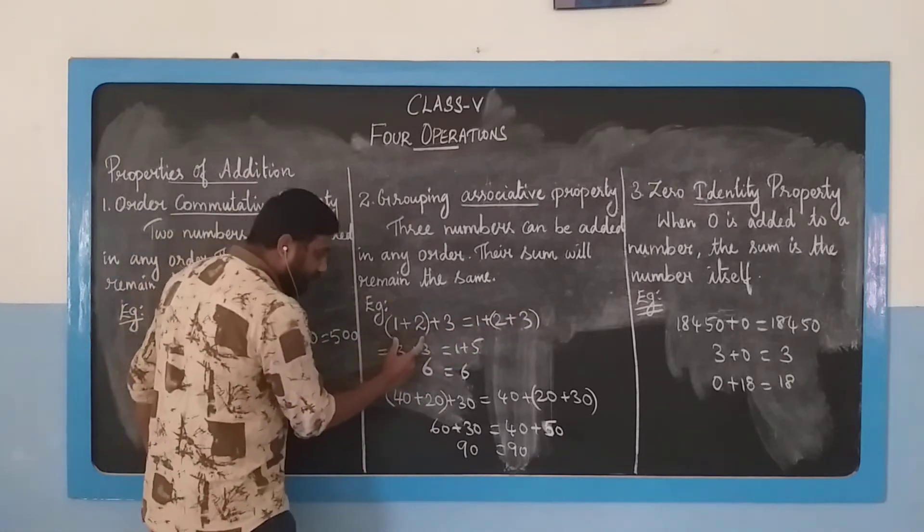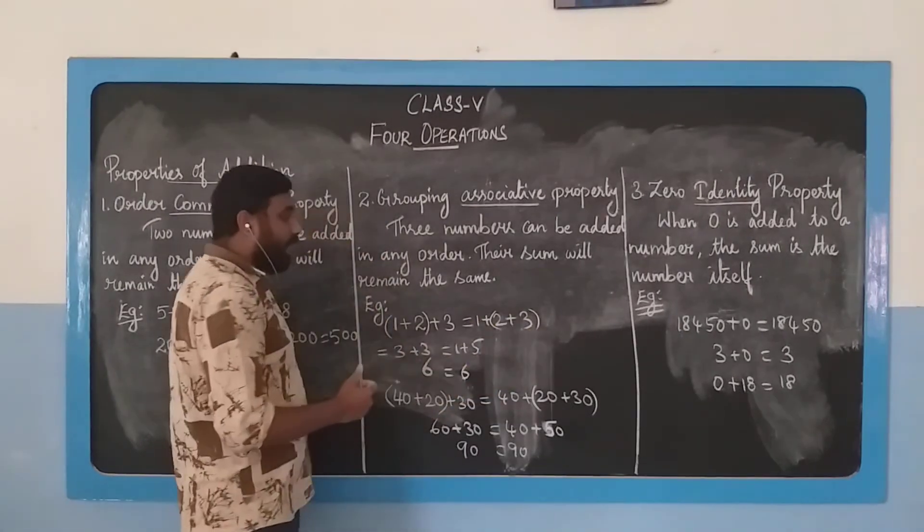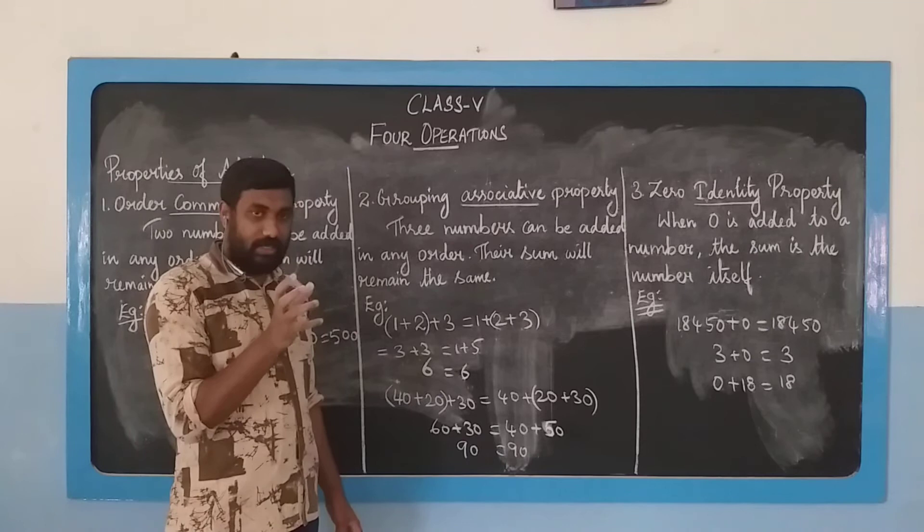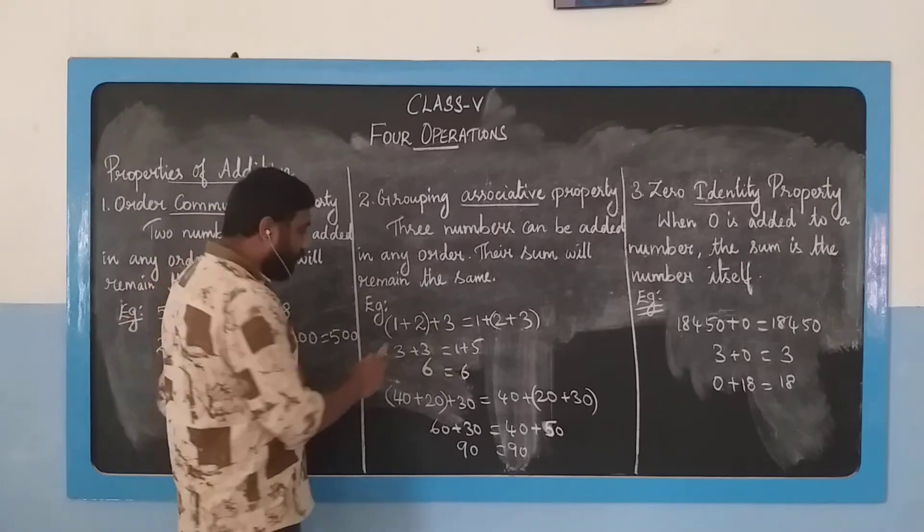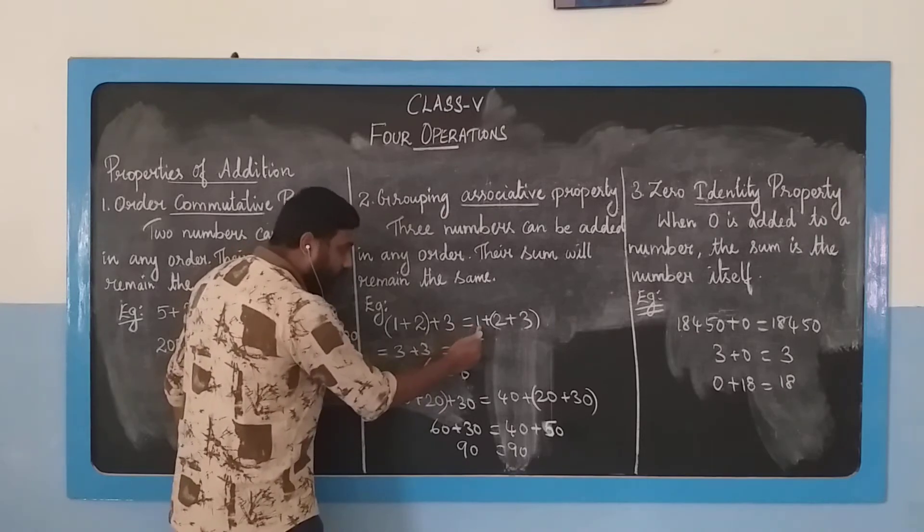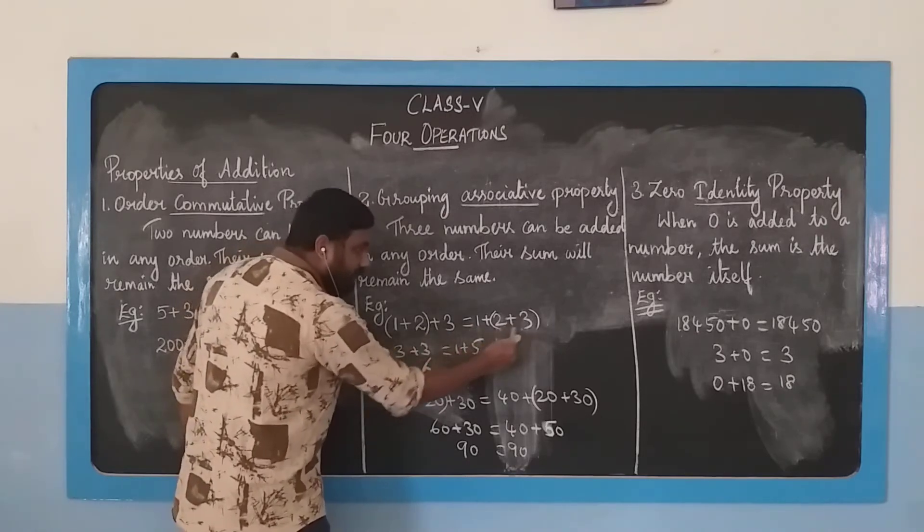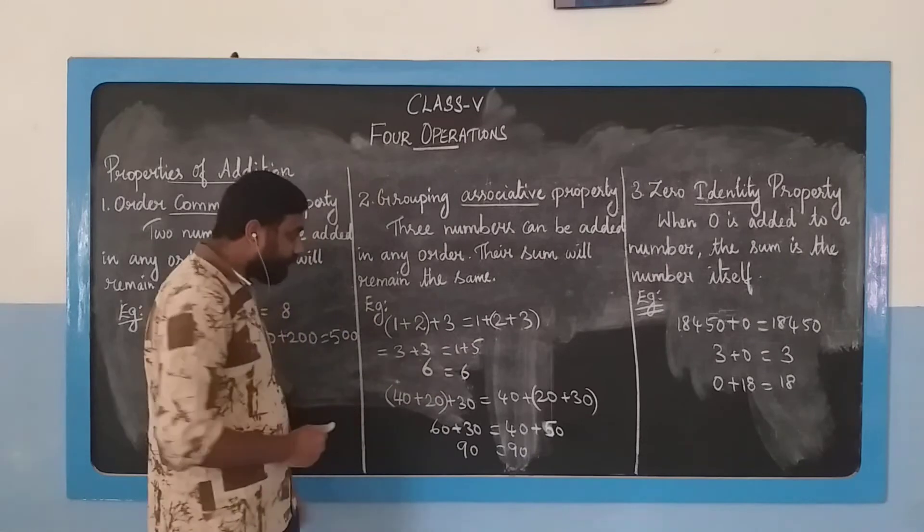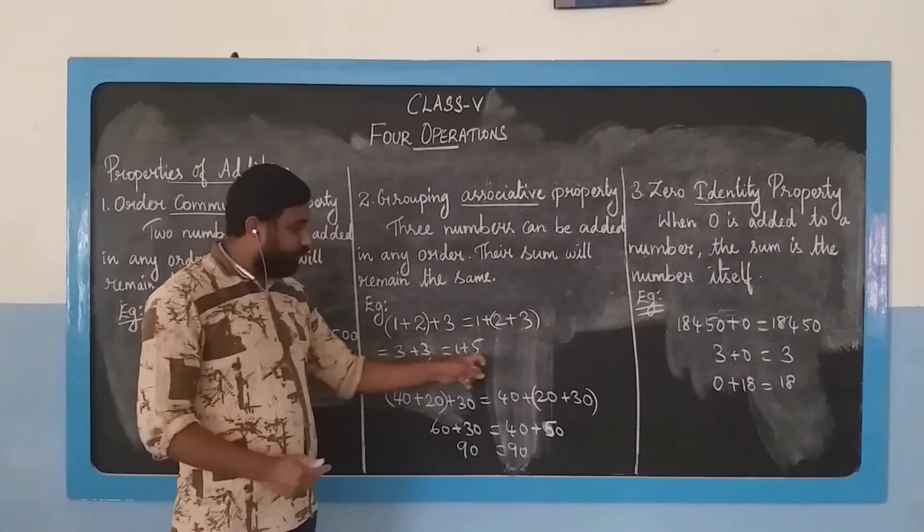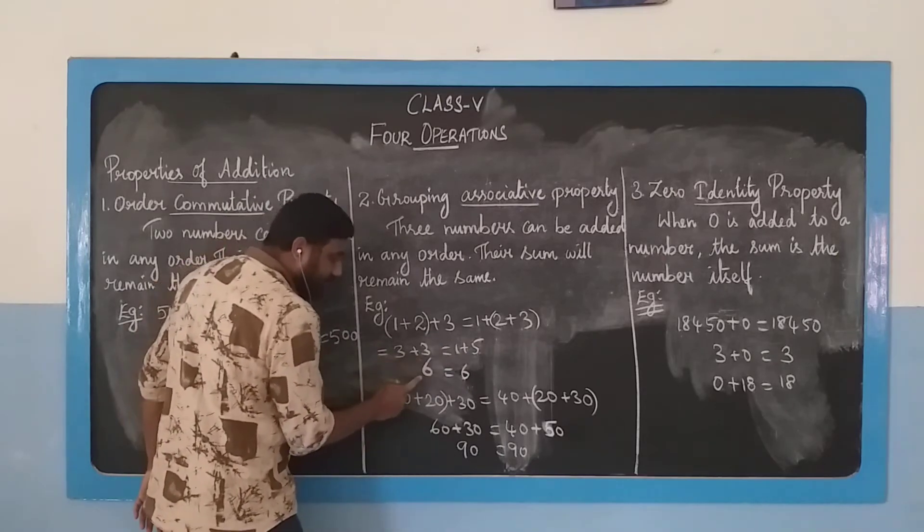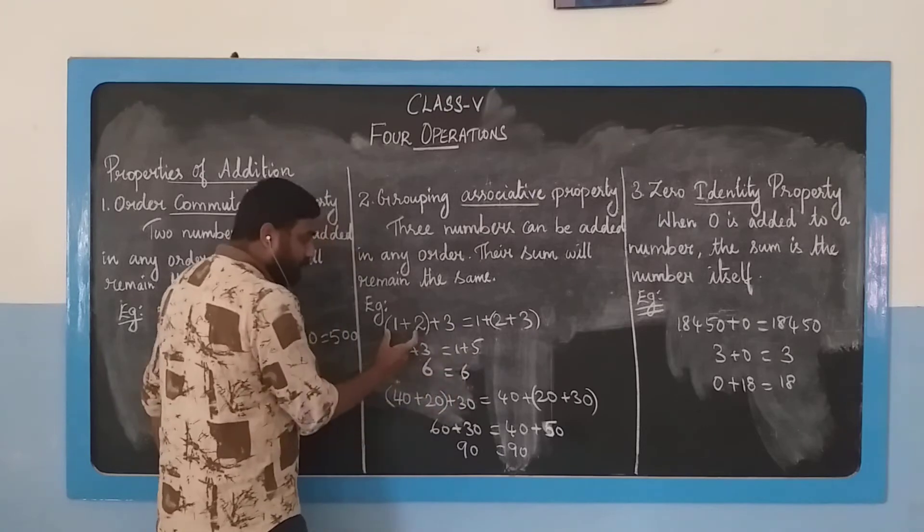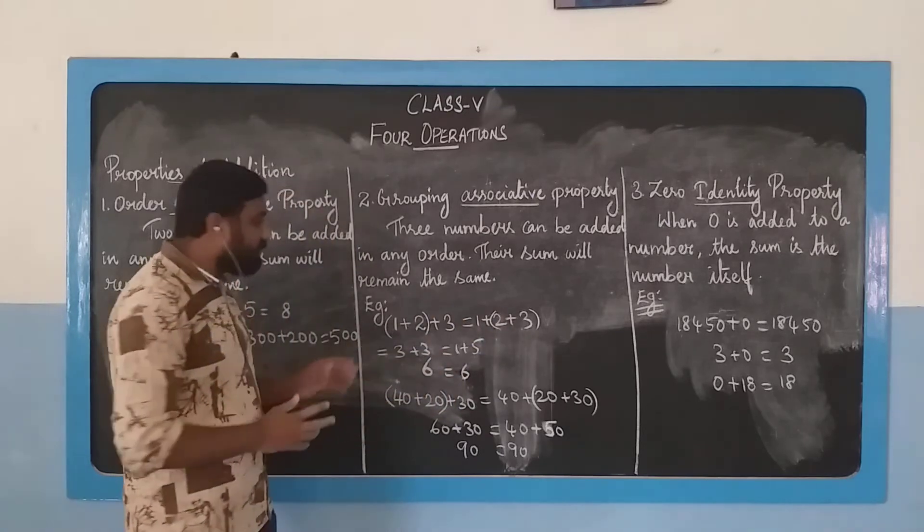When we have brackets, first we need to solve what's inside the brackets. In the first case, 1 plus 2 equals 3, then plus 3. In the second case, 1 is written, then 2 plus 3 equals 5. In both cases, we are getting 3 plus 3 here and 1 plus 5 here. 3 plus 3 equals 6. What is 1 plus 5? It is also 6. So in both cases the answer is 6.